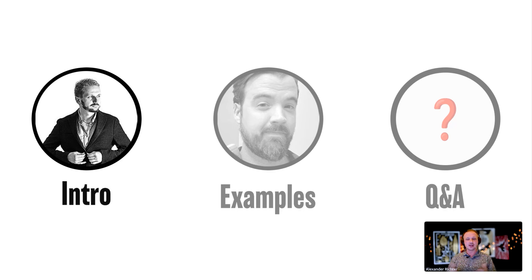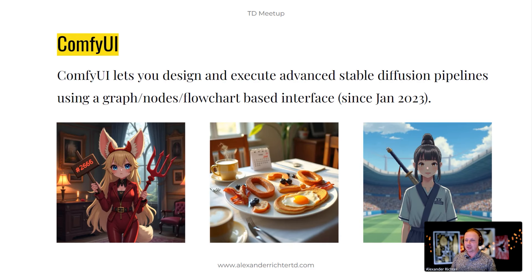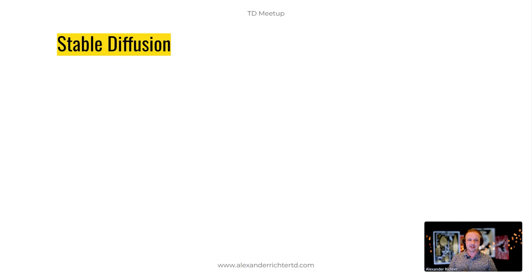Afterwards we do a Q&A. I always like to define things at the beginning, so: what is ComfyUI? ComfyUI lets you design and execute advanced stable diffusion pipelines using a graph/nodes flowchart-based interface. It's pretty young — the first commit was January 2023. To talk about ComfyUI we first need to talk about its big brother, Stable Diffusion, because ComfyUI has such an integral relationship with it.